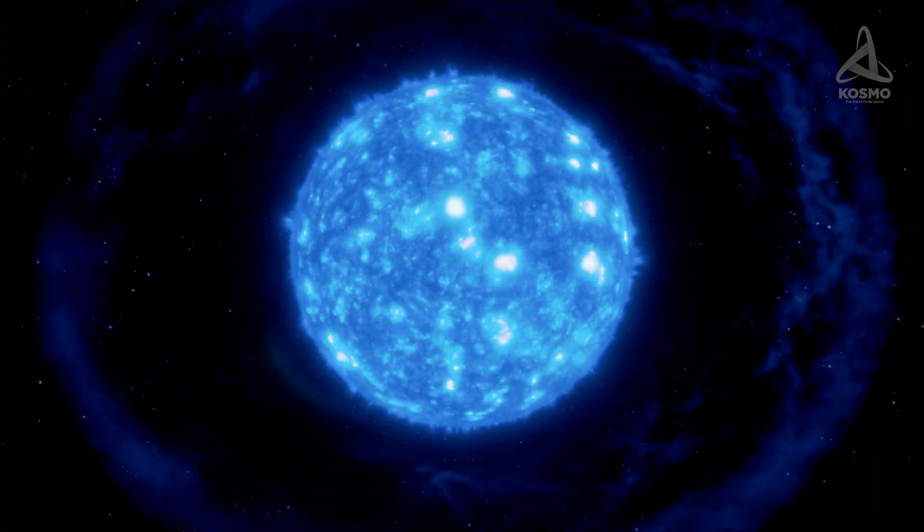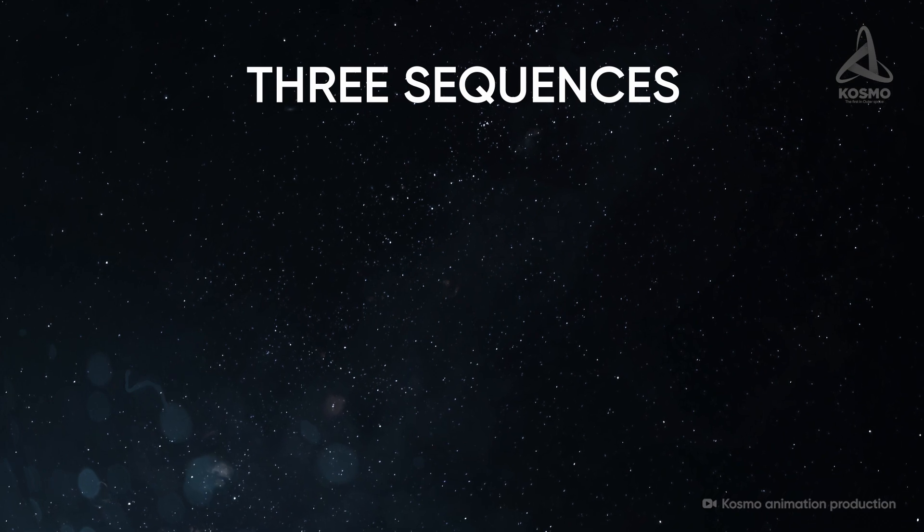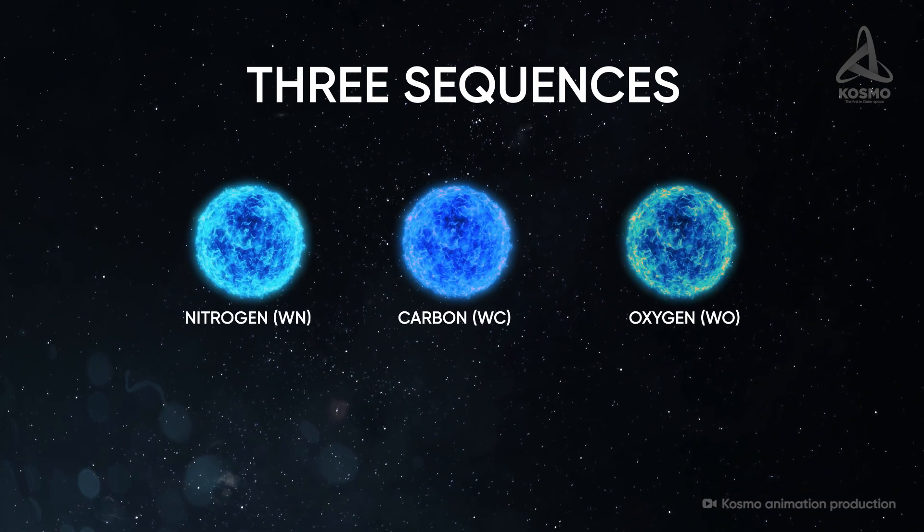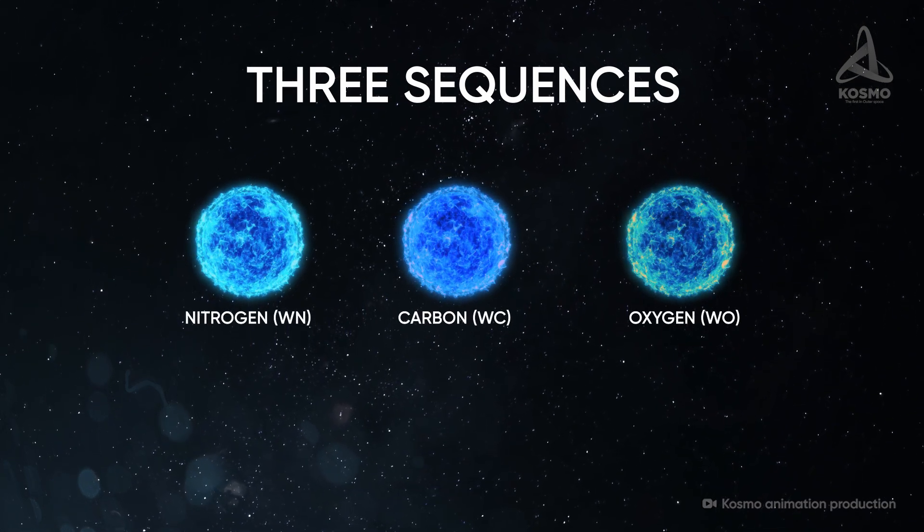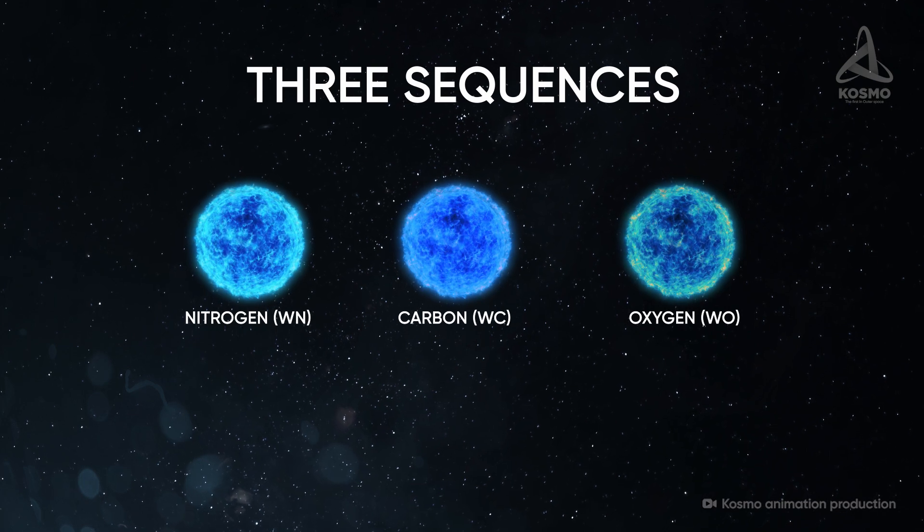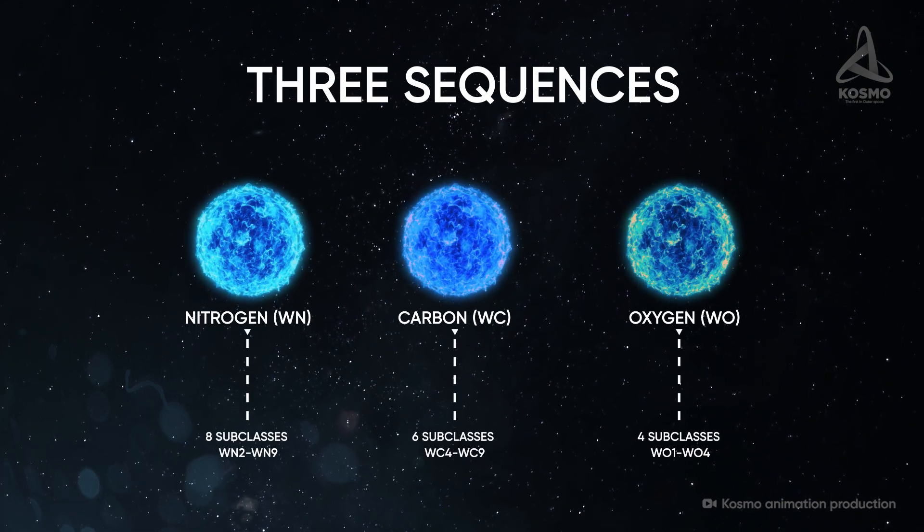Wolf-Rayet stars are subdivided into three main sequences depending on the prevalent element in the spectrum: nitrogen, carbon and oxygen sequences. Each of them, in turn, is subdivided into several types.